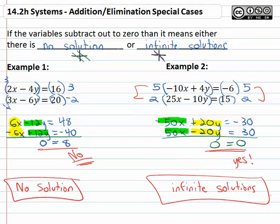So as you can see if the variable subtracts out, we either have no solution if we get something that doesn't make sense or we have infinite solutions if we get something that does make sense.